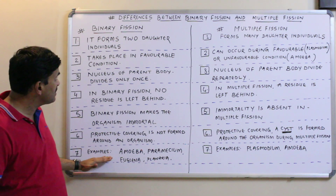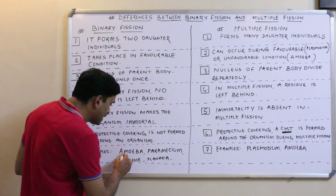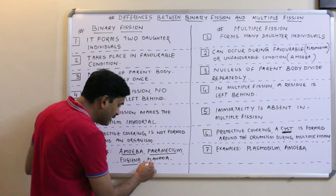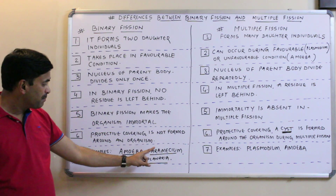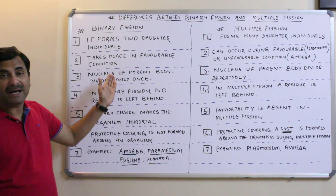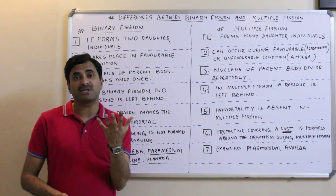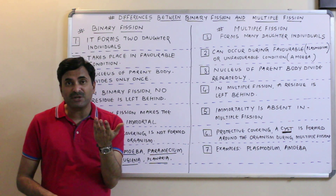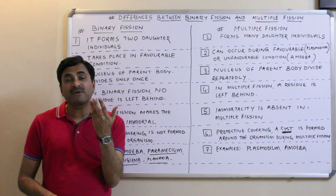The best examples of binary fission are amoeba, paramecium, euglena, and planaria. Binary fission is also of various types: simple or irregular binary fission, longitudinal binary fission, and transverse binary fission. These three types exist because of the different planes of division.